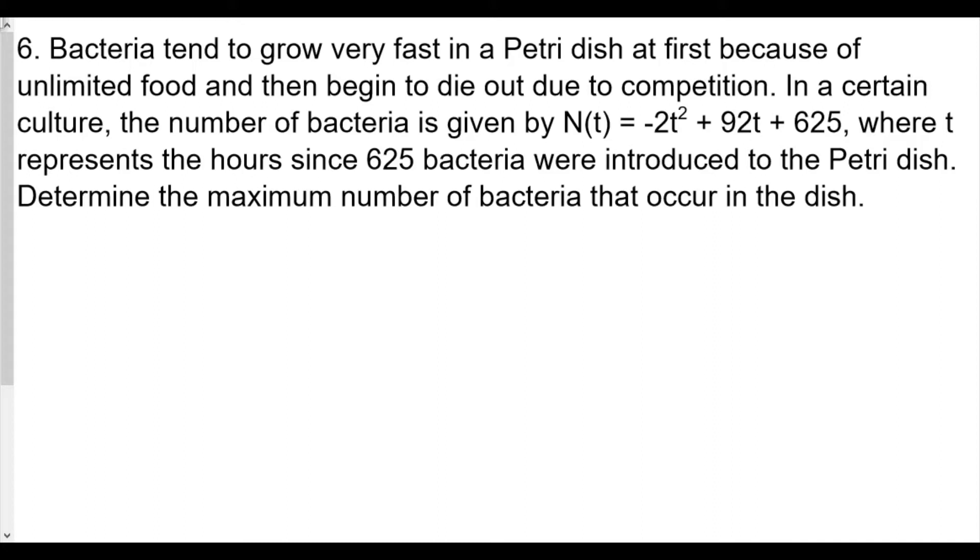Determine the maximum number of bacteria that occur in the dish. The maximum number of bacteria would be a maximum because the parabola opens downward, the a value is less than zero. The maximum is going to occur at the vertex, so we use our axis of symmetry, which means we need to find our a value, b value, and c value. A value is negative 2, b value is 92, and our c value is 625.